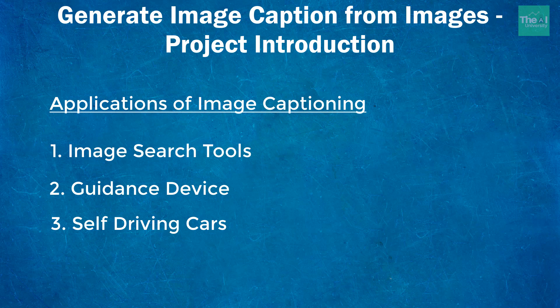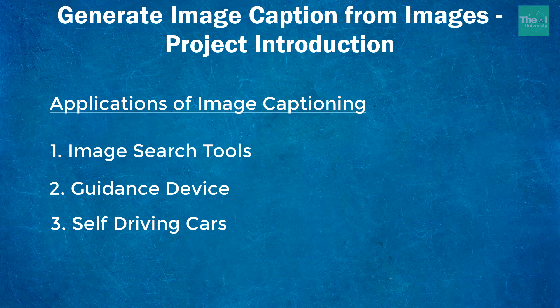The third application is in self-driving cars, where image captioning can be used to boost the self-driving system by capturing nearby scenes and converting them into captions in text form. To understand this application, a person should have knowledge of CNNs, recurrent neural networks, and neural network training concepts as prerequisites. I have already created a series for recurrent neural networks, so you can click on the 'i' button above to acquire that knowledge.